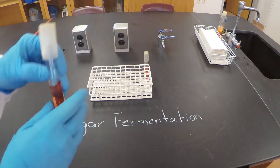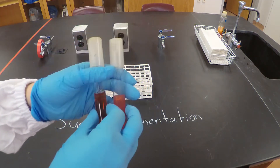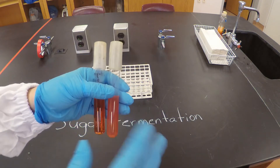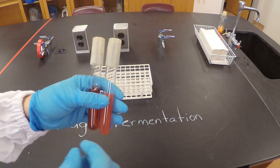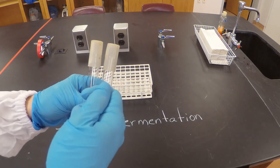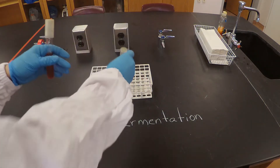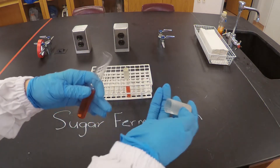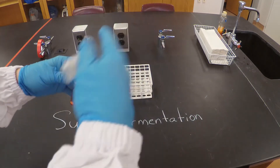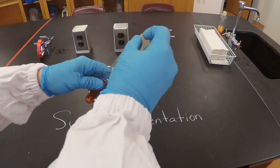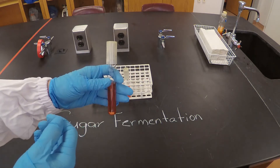We inoculated both of them. I'm not going to go into much detail how we do that because we learned that in a different video. But for the liquid one, you can just take a loop and following aseptic techniques — you're going to flame the mouth, take the bacteria with the loop, put it in, shake it, flame it again, and close it.